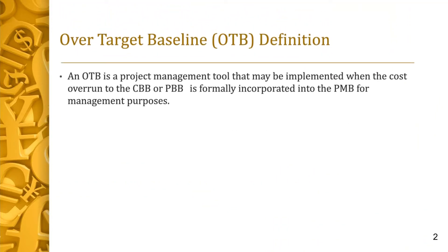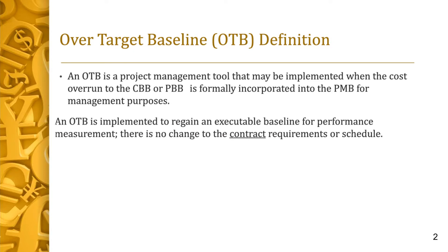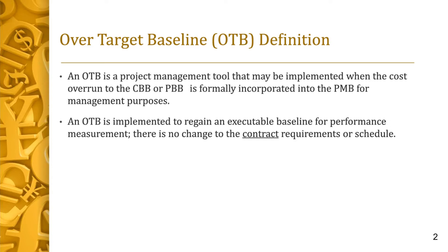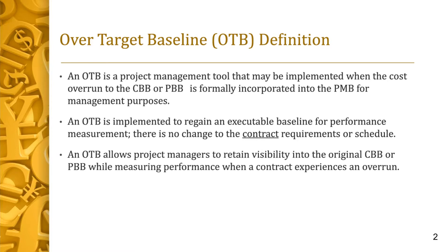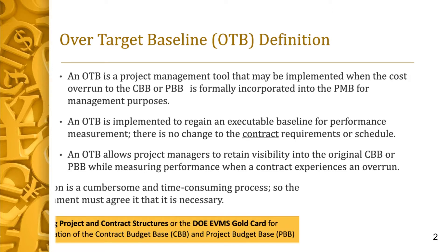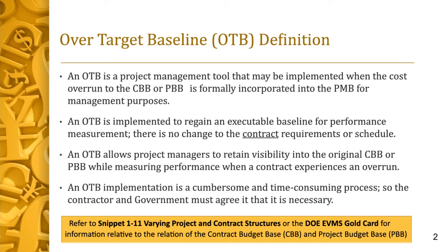An OTB is a project management tool that may be implemented when the cost overrun to the Contract Budget Base (CBB) or Project Budget Base (PBB) is formally incorporated into the Performance Management Baseline (PMB) for management purposes. An OTB is implemented to regain an executable baseline for performance measurement. There is no change to the contract requirements or schedule. The CBB or PBB does not change when an OTB is implemented. An OTB allows project managers to retain visibility into the original CBB or PBB while measuring performance when a contract experiences an overrun. The implementation of an OTB should not be taken lightly, as it is not uncommon for the entire process to take up to six months, which may be too long of a period without basic cost reporting, depending on the number of months or years remaining on the project.